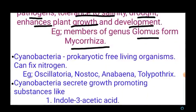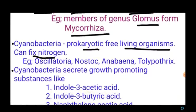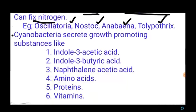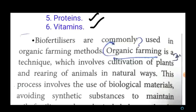Cyanobacteria are prokaryotic free-living organisms and were the first organisms to fix atmospheric nitrogen. Examples include Anabaena, Nostoc, and Oscillatoria. Cyanobacteria secrete growth-promoting substances like indole-3-acetic acid, indole-3-butyric acid, naphthalene acetic acid, amino acids, proteins, and vitamins.